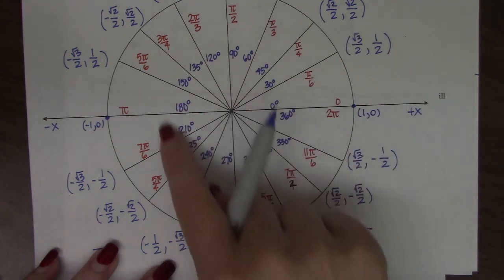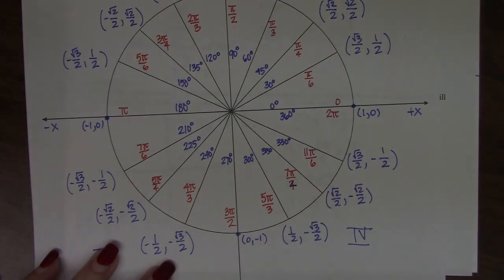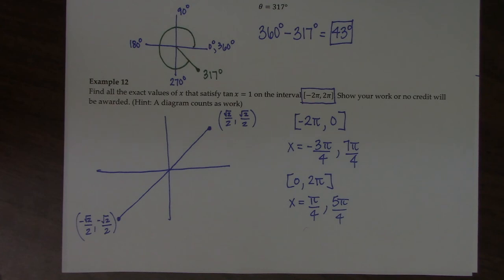And then to go from 0 to positive 2π, we counted positively around the circle. There were four answers to this question.